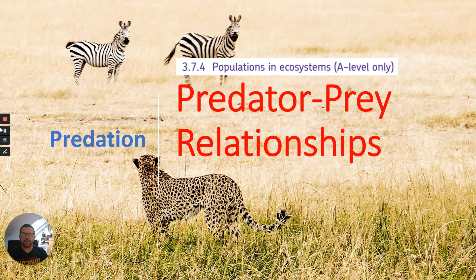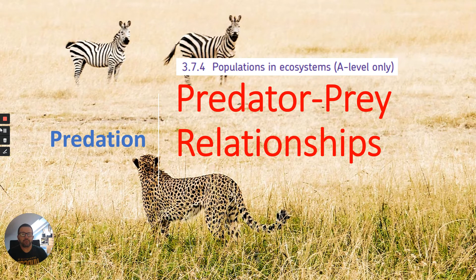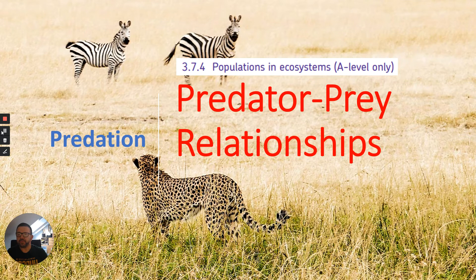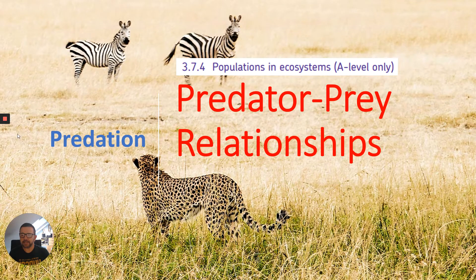Hi everyone. This is an A-level video on populations and ecosystems, AQA A-level biology. It's related to predator-prey relationships and particularly talking about predation and cycles between predator and prey. This is related to inter-specific and intra-specific competition, but more looking at relationships in this case.